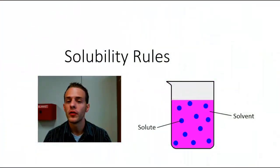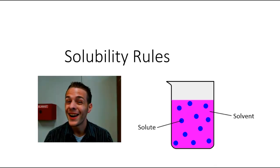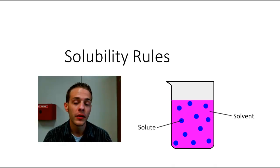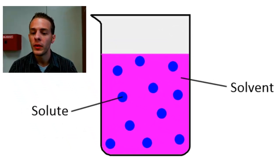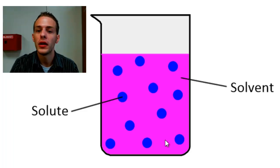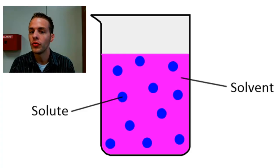In this video we're going to talk about the solubility rules — a set of rules that govern the solubility of ionic compounds in water. Solubility refers to how well a solute dissolves in a solvent to make a solution. The solute is the minority component, the stuff that actually gets dissolved, shown here as blue particles. The solvent is the majority component that does the dissolving, shown here in pink.